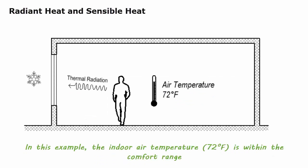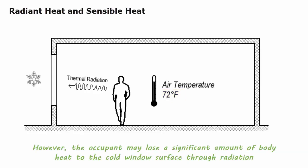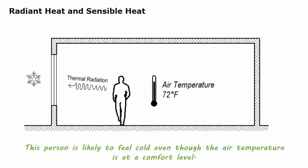In this example, the indoor air temperature of 72 degrees F is within the comfort range. However, the occupant may lose a significant amount of body heat to the cold window surface through radiation. This person is likely to feel cold even though the air temperature is at a comfort level.